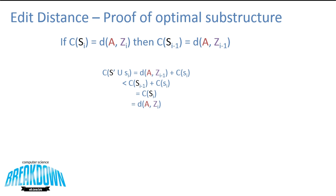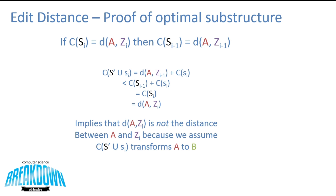This is strictly less than the cost of s at i minus 1 plus the new operation — which is the cost of s at i. But if this is the cost of s at i and it equals the distance from a to z at i, this implies the distance from a to z at i is not actually the distance between a and z at i, because we assumed the cost of s prime union s_i transforms a to b. Thus a contradiction has been formed, and optimal substructure exists.